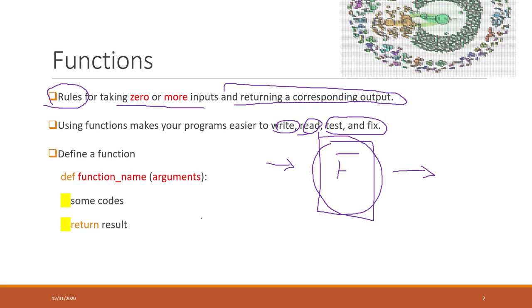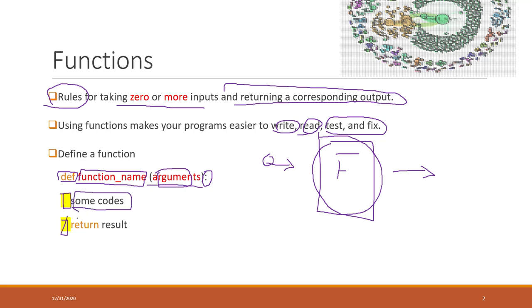To define a function, we use the DEF keyword, followed by the function name and parentheses. Within the parentheses, you have to specify what arguments you want to receive — those will be the inputs. Do not forget the colon. After that, you need indentation so that Python knows those code blocks belong to this function. You can also decide whether or not you want to return a result. If you have a return statement, that will return the output of the function. When Python executes the return statement, the function will stop and be terminated.